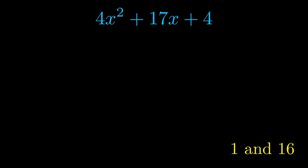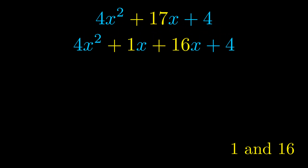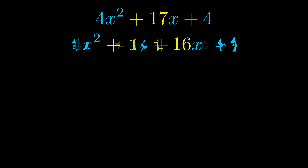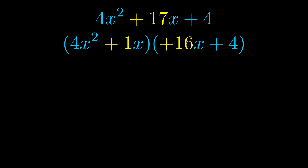Notice how I'm going to keep my first term and my last term completely unchanged. It is only this b term highlighted in yellow that gets expanded into this correct factor pair. Once we've done this, we go ahead and put parentheses around the first two terms and the last two terms.